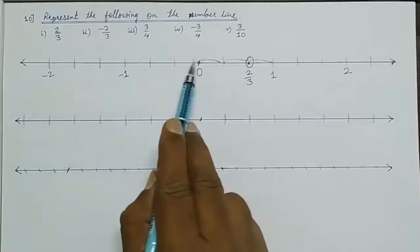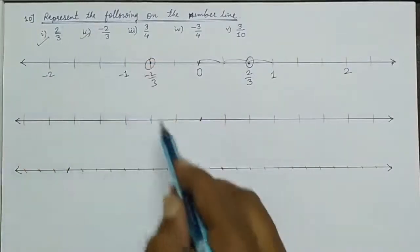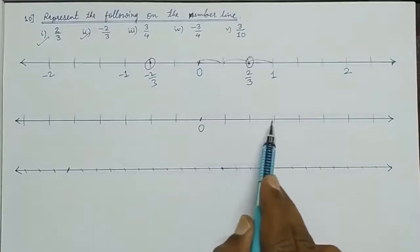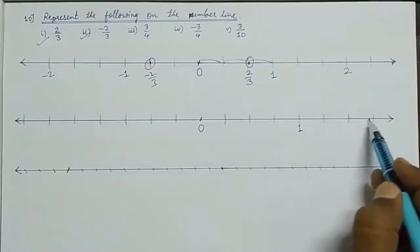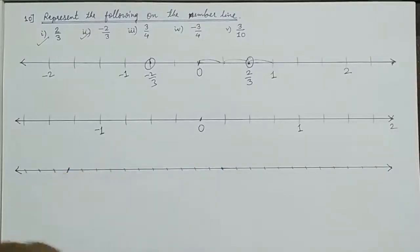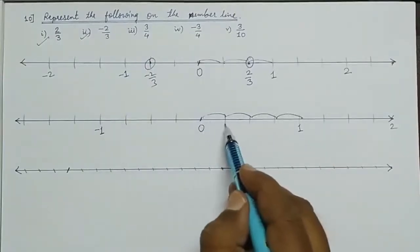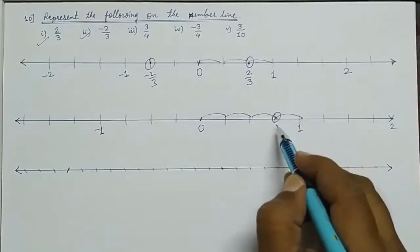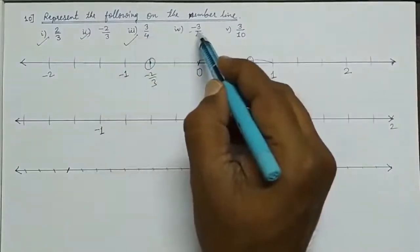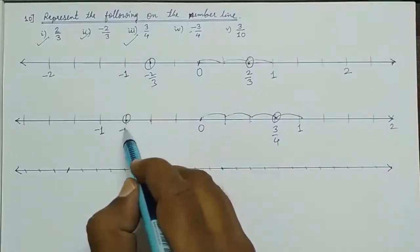Similarly, minus 2 upon 3 is at the second part from 0 going negative. Next: 3 upon 4 — divide 1 unit into 4 equal parts. From 0: 1 by 4, 2 by 4, 3 by 4, 4 by 4 which is 1. So 3 by 4 is the third part. Similarly, minus 3 upon 4: counting from 0 going negative — minus 1 upon 4, minus 2 upon 4, minus 3 upon 4.